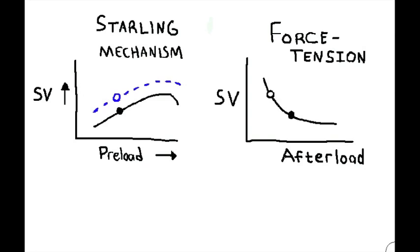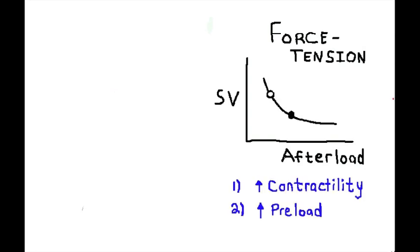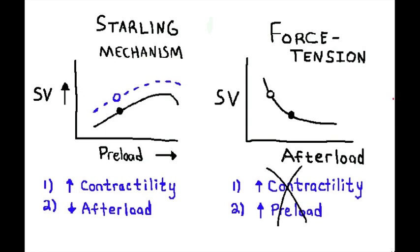Let's focus on the force-tension graph first. Since we do not see an upward or downward shift, this means there have been no changes in preload or contractility. The only change we see is a decrease in afterload. From this graph we can see unequivocally that there is no change in preload or contractility, so we swing over to the Frank-Starling curve, cross out contractility and preload, and all we are left with is a decrease in afterload. The drug given is an afterload reducer — in this case, hydralazine.